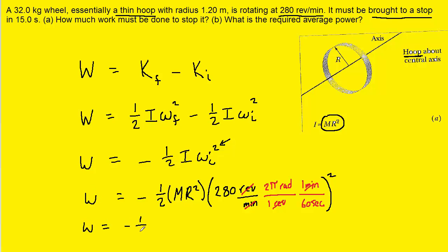And then we can go ahead and plug in the known values for the mass, which was 32 kilograms. And then we have the radius squared, and that radius was 1.2 meters. So we're going to have 1.2 meters squared. And then the rest of this conversion. And when we carefully type this into our calculators, we should get about negative 1.98 times 10 to the power of 4. And then the standard unit of work is joules. So this is the correct answer to part A.